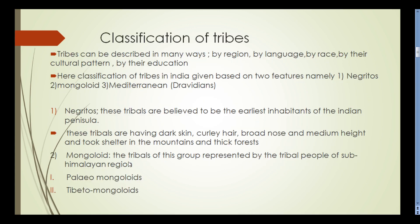Classification of tribes: tribes can be classified in many ways — by religion, by language, by race, by cultural pattern, and by education. The classification of tribes in India is made based on three features: Negroids, Mongoloids, and Mediterraneans, that means Dravidians — people living near the Mediterranean Sea.